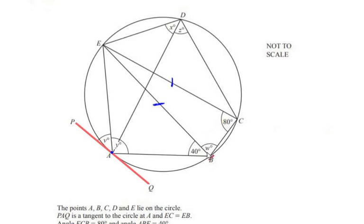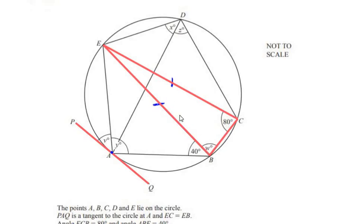To start with, I will be looking at triangle BCE, because this is the triangle in which maximum information is given — two sides are equal and an angle is also given. Now if two sides are equal in a triangle, that is called an isosceles triangle. So that makes the two base angles — that is, angle ECB of 80 degrees and angle W — the same. So W is 80 degrees.